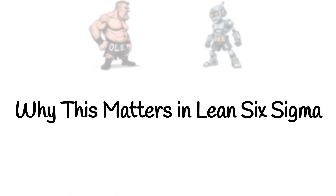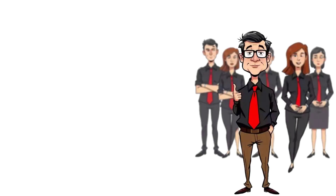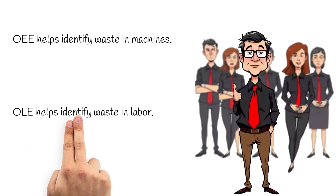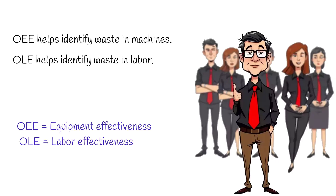In Lean Six Sigma, data drives improvement. OEE helps identify waste in machines; OLE helps identify waste in labour. When used together, they prevent finger-pointing and highlight exactly where to focus improvement efforts, whether it's on equipment reliability or workforce effectiveness. So remember: OEE is equipment effectiveness, OLE is labour effectiveness. Both use Availability, Performance, and Quality — but the resource being measured, machines versus people, is what sets them apart.